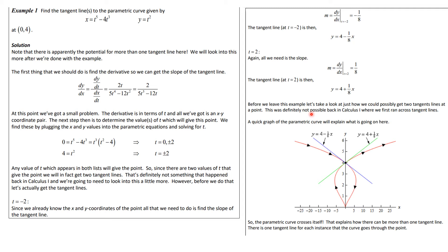How can there be two tangent lines at the same point? This was not possible in Calculus 1 when we differentiated functions, because functions satisfy the vertical line test. However, this parametric curve is not a function — it does not satisfy the horizontal line test. If you graph it, the curve comes along, loops, and crosses back over itself. The parametric curve crosses itself, which explains how there can be more than one tangent line: one for each instance that the curve passes through that point.